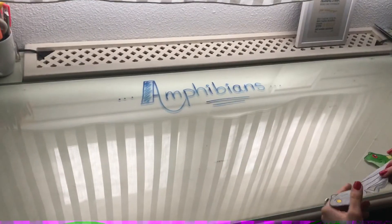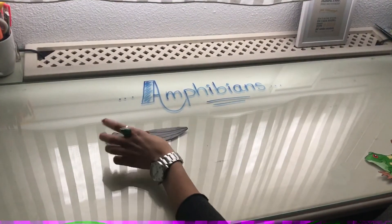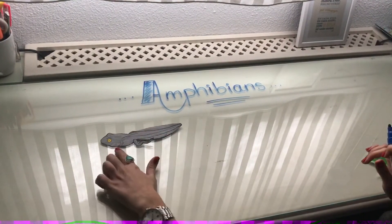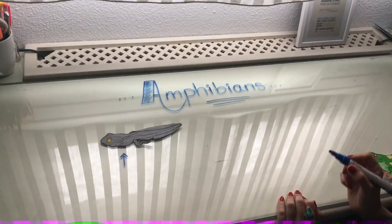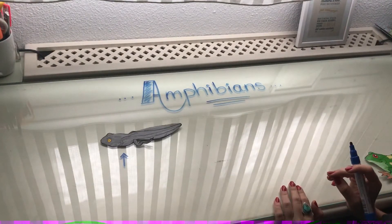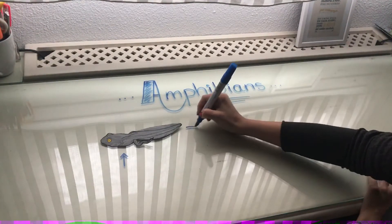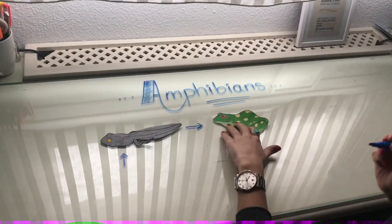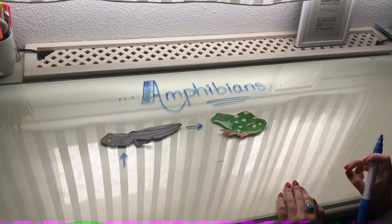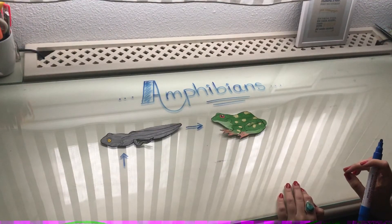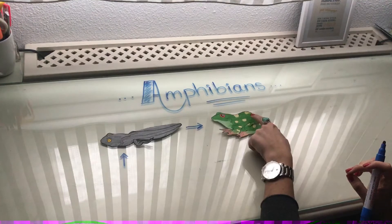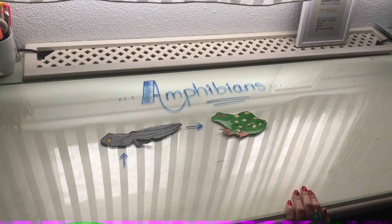Amphibians often start their lives having gills. Gills, if you remember, are these little lines that fish also have, so they can breathe. When they develop and change, they start breathing with lungs, like we do. Some amphibians are able to breathe with lungs or gills, and also with their skin — they use it as a respiratory organ.